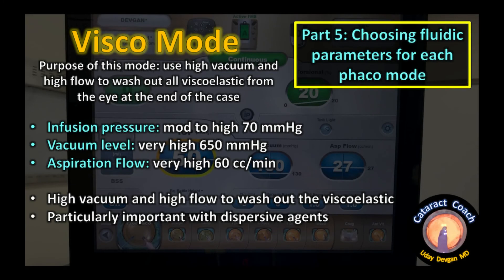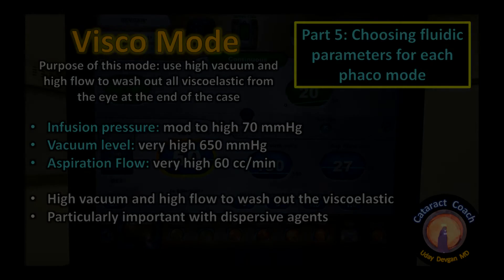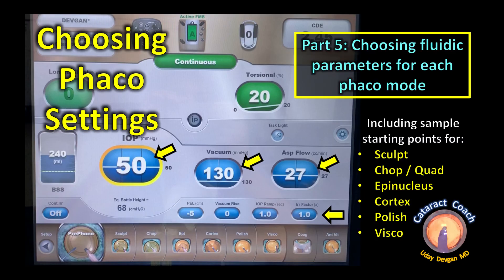Capsule polish mode uses low vacuum to remove small bits of lens material adhered to the posterior capsule: low infusion pressure, low vacuum, low flow — careful not to damage the posterior capsule, just aspirating off small adherent bits. Finally, viscoelastic removal mode uses high vacuum and high flow to wash out all viscoelastic: high infusion pressure, very high vacuum, very high flow — especially important for removing dispersive agents. I hope you've enjoyed this series; there will be more to come. Thank you for watching.